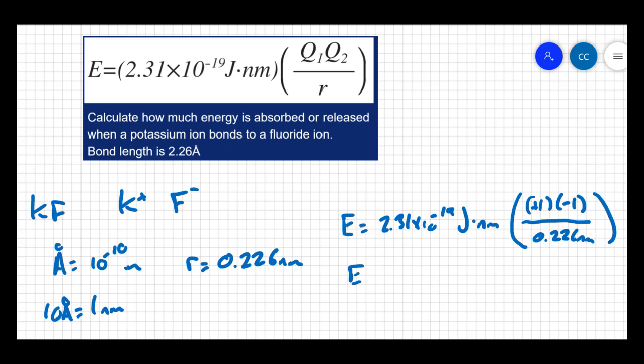So my energy here is going to be this constant value times negative one divided by the bond length. The nanometers cancel out as units, and I'm just left with joules, which makes sense. And when I look at my calculation, I get negative 1.02 times 10 to the negative 18 joules.